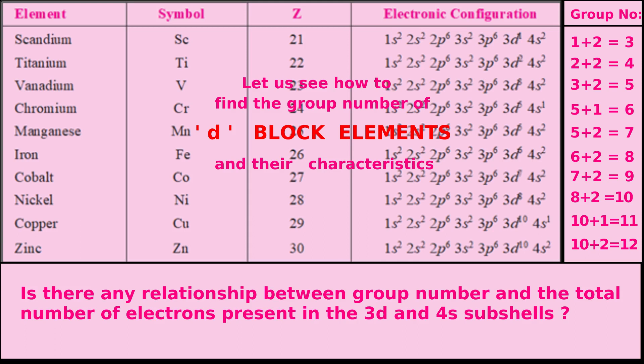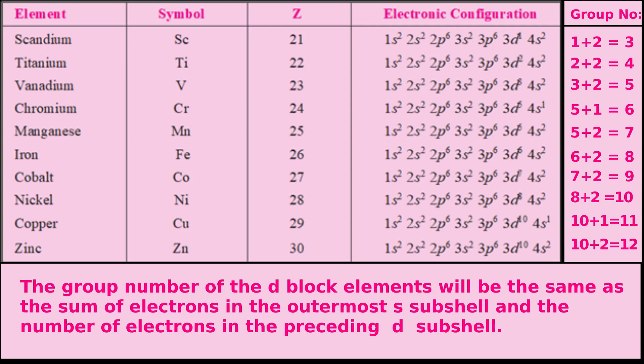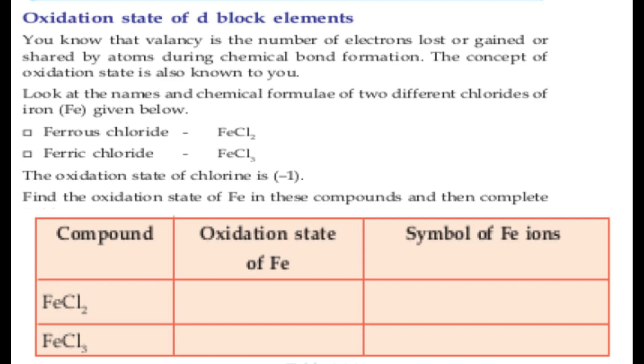Let us see how to find the group number of d-block elements and their characteristics. By observing the electronic configurations of d-block elements, we can determine the group number. To determine the group number of d-block elements, we add the electrons in the last two sub-shells, that means the S and D sub-shells.